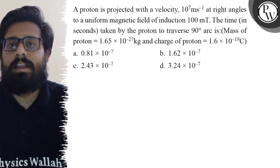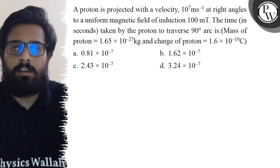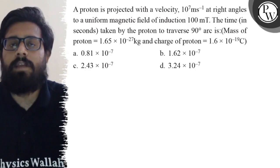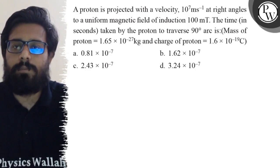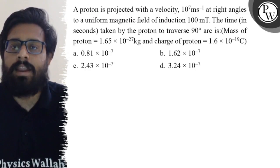traverse a 90 degree arc is given. You have the mass of the proton as 1.65 × 10^-27 kg and the charge of the proton is given as 1.6 × 10^-19 coulomb.